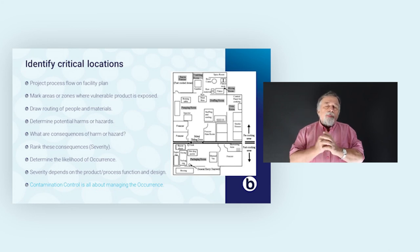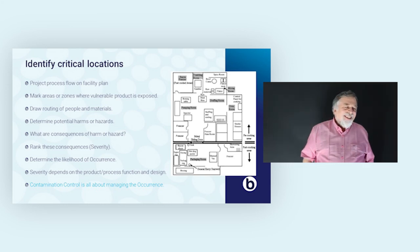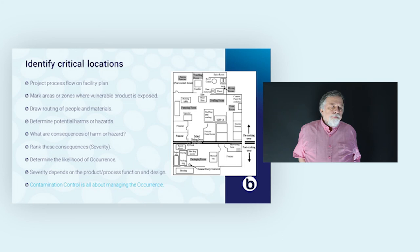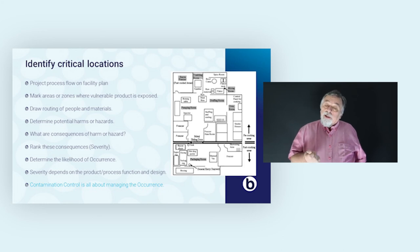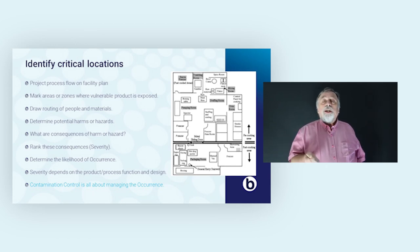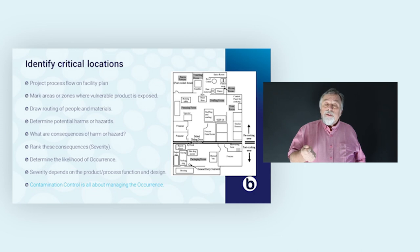Later on, I will also explain how you can prioritize the different types of risk in the process. This risk is determined by occurrence and severity. Severity depends on the design of your product, and probability depends on the way you are manufacturing it. With contamination control, the only factor we can influence is the probability — the occurrence. Thank you for your attention. In the next part, we are going to look in a little more detail at the contamination mechanisms and cleanliness elements.